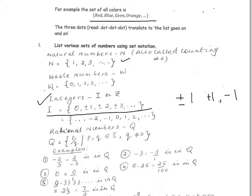Another way of writing the exact same set is with the braces and the dot dot dot indicating the list continues in both directions: dot dot dot, negative three, negative two, negative one, zero, one, two, three, dot dot dot — which tells us the list goes on and on on either side, beyond negative three and three.